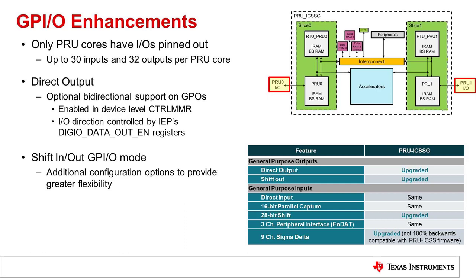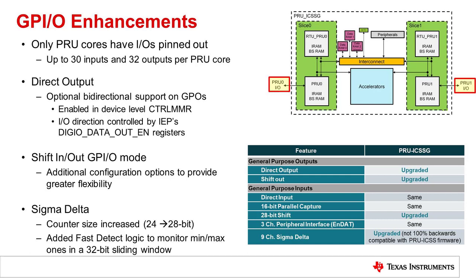The PRU ICSSG's Shift-In and Shift-Out IO modes add new configuration options for greater flexibility. For example, there are now options to select a 0 or 1 start bit when operating in Shift-In mode, or to output a free-running clock when in Shift-Out mode. The Sigma Delta also has several enhancements, including increasing the counter size to achieve greater precision and adding fast-detect logic to monitor the minimum and maximum ones in a 32-bit sliding window.